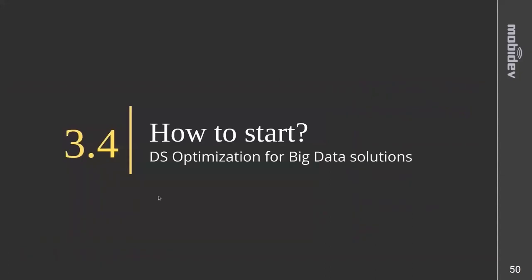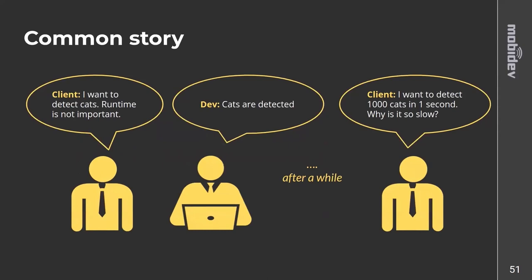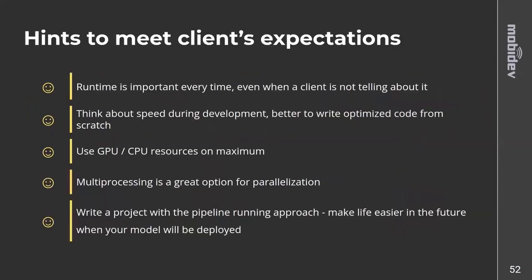The last chapter is optimization — a common story: a client asked you to detect cats and said runtime is not important. The data scientist applied the algorithm and everything worked, but after a while the client came back asking why detecting one thousand cats per second is so slow. You need to know that runtime is important every time, even if the client doesn't mention it. Think about speed during development.